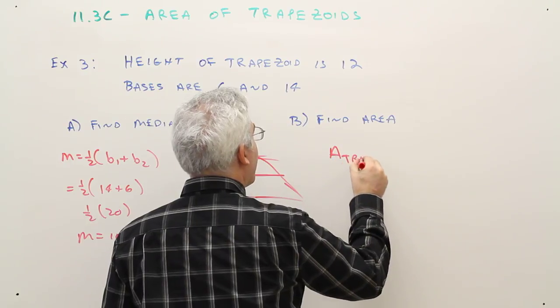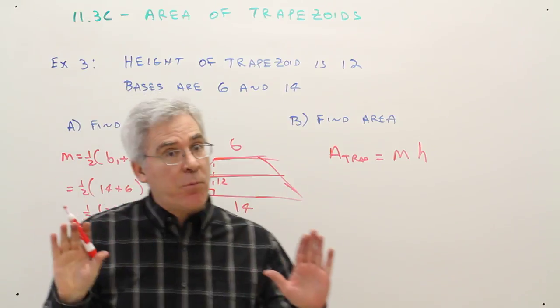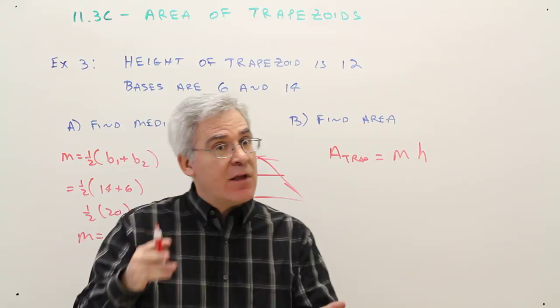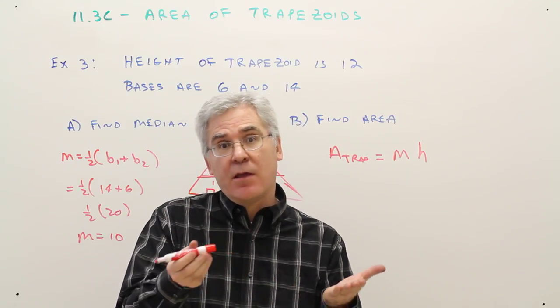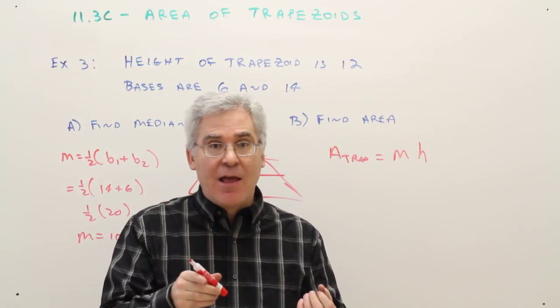So the area of a trapezoid equals the median times the height. Not 1 half. The 1 half is embedded in the median. So just MH. Just like BH for the rectangles and parallelograms. So think of BH and MH.